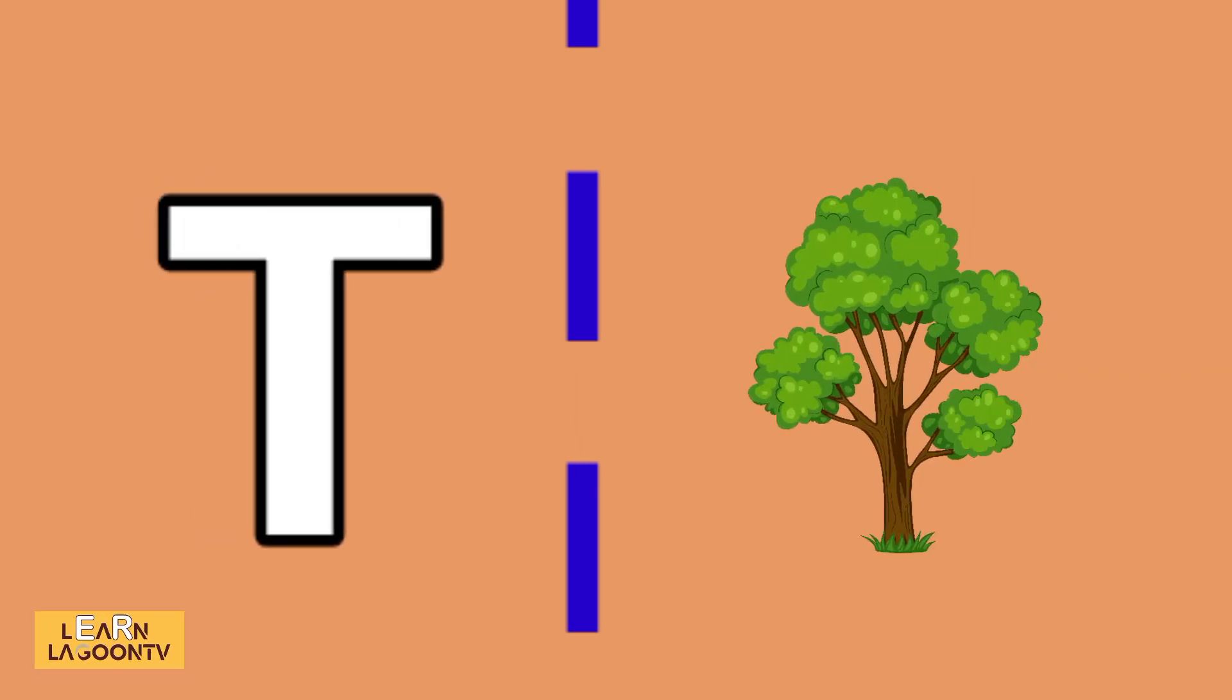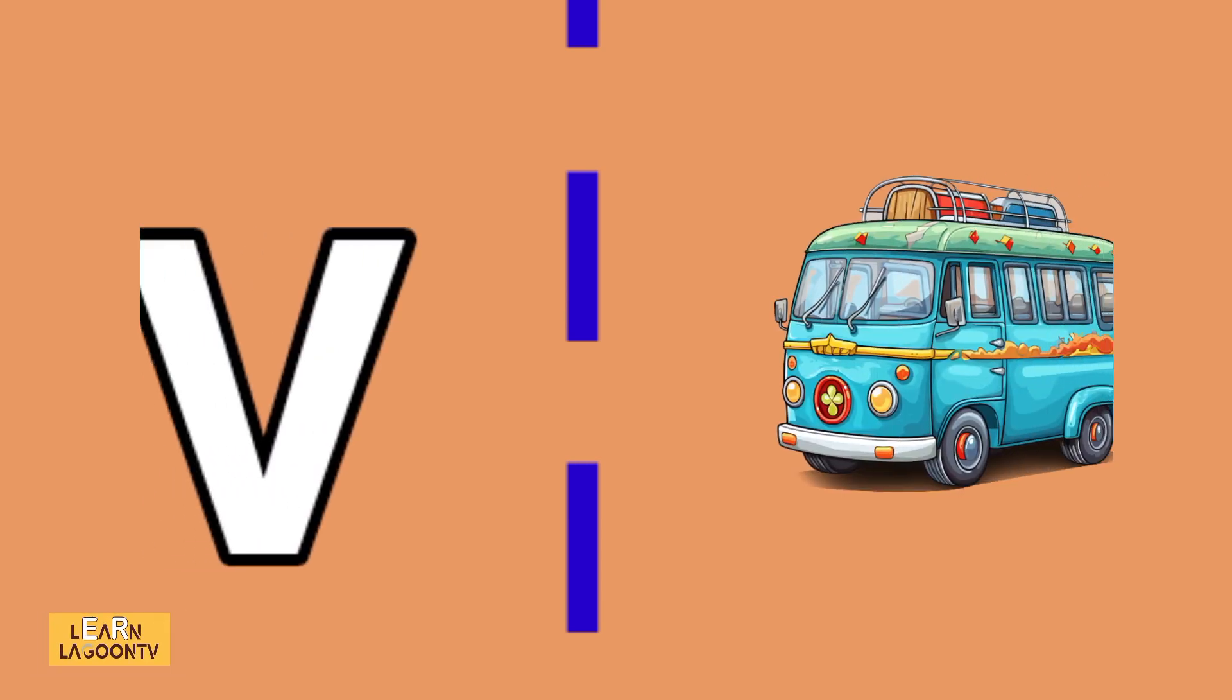T is for tree, U is for umbrella, V is for van.